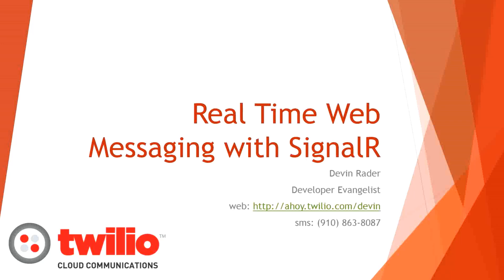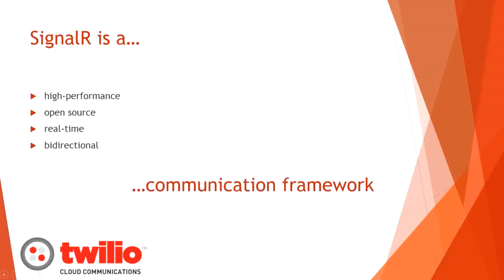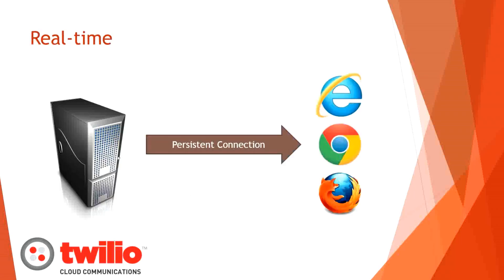Hopefully you'll learn a whole bunch about SignalR in the next hour. Let me start by laying out a definition: SignalR is a high-performance, open source, real-time, bi-directional communications framework. That's a lot of large fancy words, so I think it's important to break out those individual words and talk about them separately to get a better idea of what SignalR is and what it can do for you.